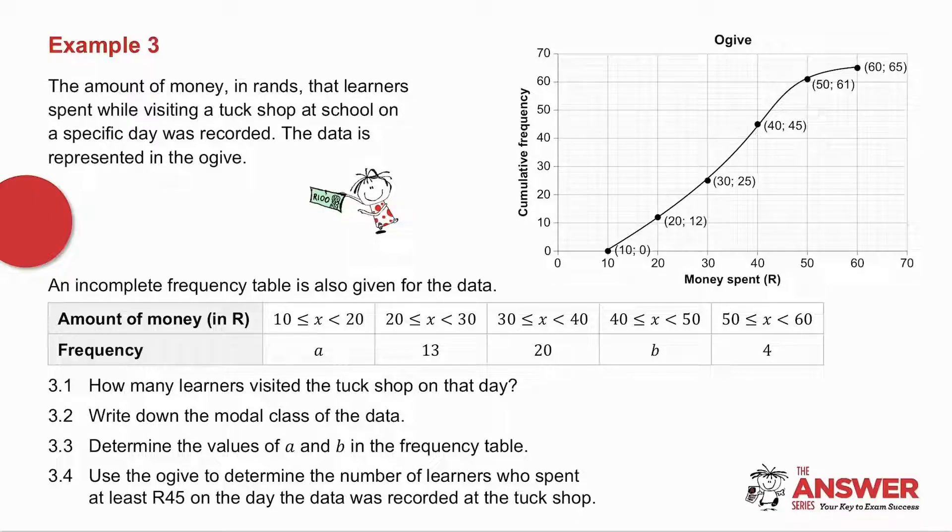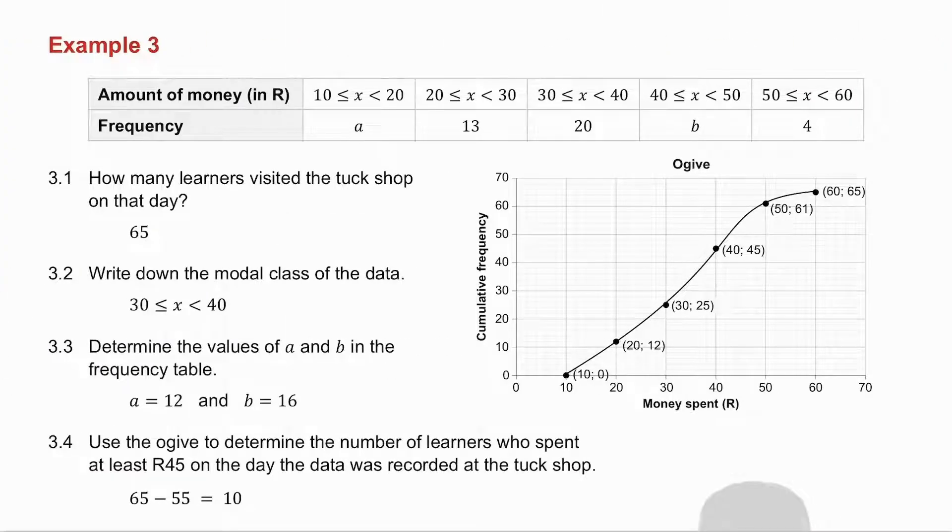Example number three. I want you to pause the video, try this yourself, and then we'll do it together. 3.1. How many learners visited the tuck shop? Well, if I take my top value, it's 65. 3.2. Write down the modal class. The modal class is the one that has the highest frequency, so it's the one which has the biggest gap. So it's there. So it's from 30 to 40.